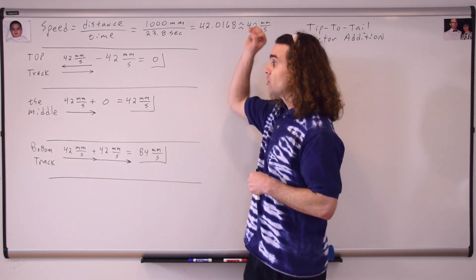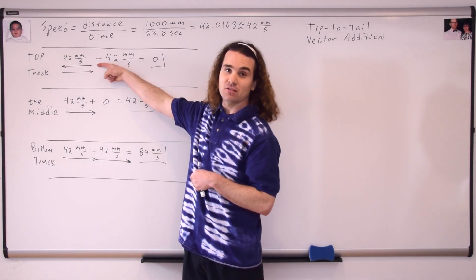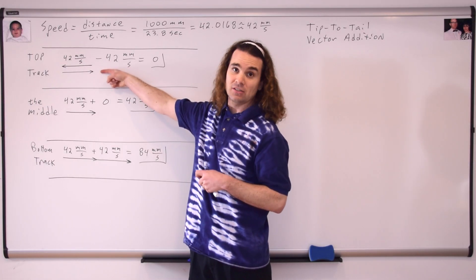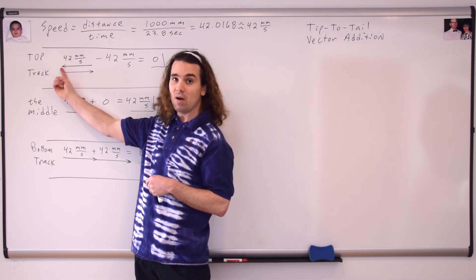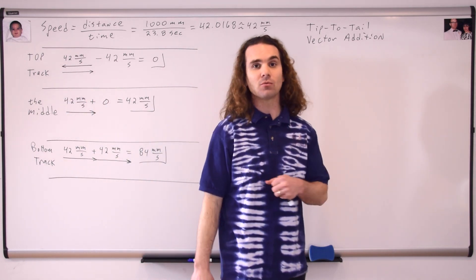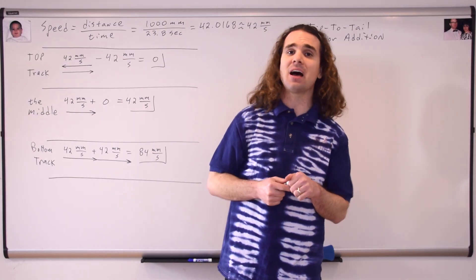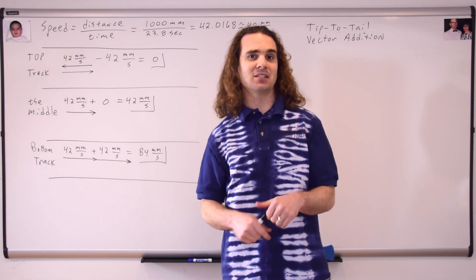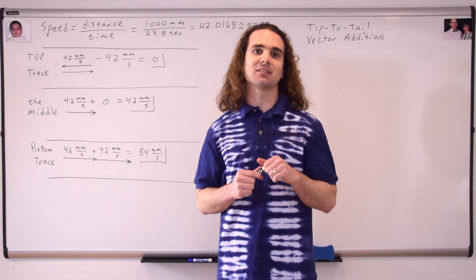And you can see we've placed the tip of one vector on the tail of the other vector, and the net vector or the resultant vector is twice as long, or 84 millimeters per second. For the top track, the track itself was moving to the left, so we have the vector representation for the track moving to the left. The arrow goes to the left. But the race car was moving to the right, therefore that vector is going to be to the right. And you can see we put the tip of one vector on the tail of the other vector, and these two end up canceling one another out completely. Therefore, the net speed for the top track is equal to zero. That is the basic concept of tip-to-tail vector addition, and we're going to spend more time talking about that in our next lesson.